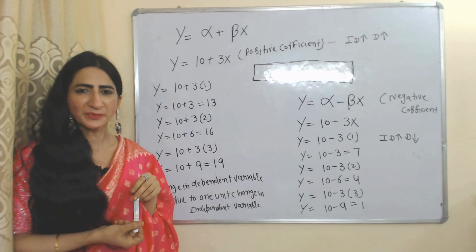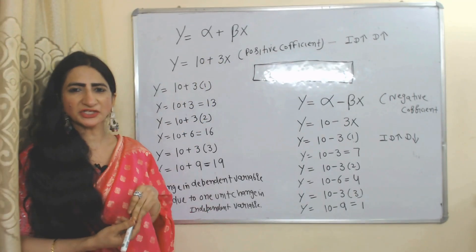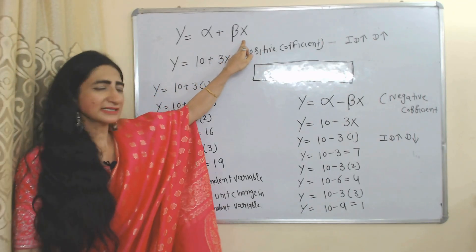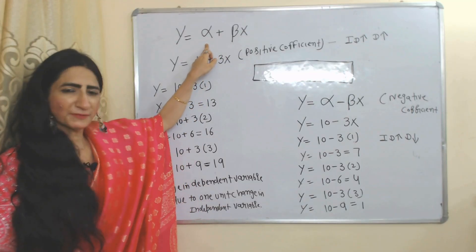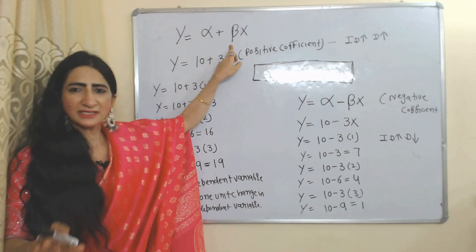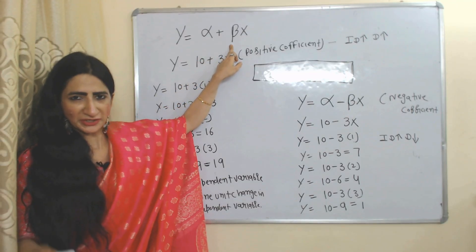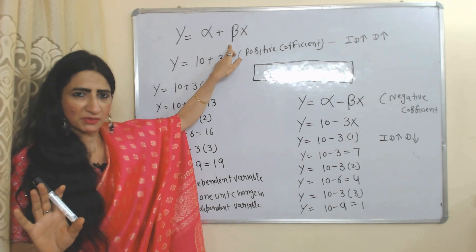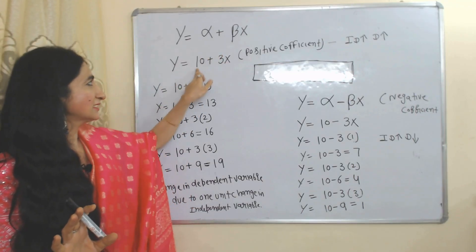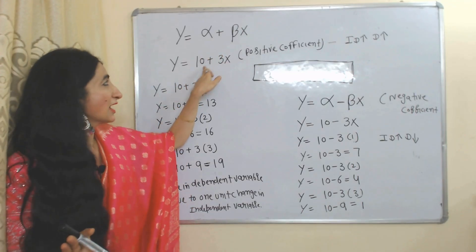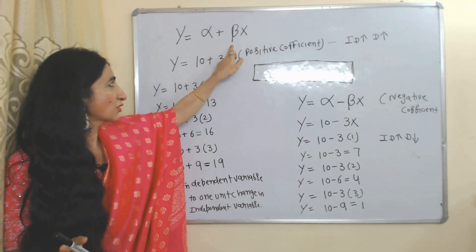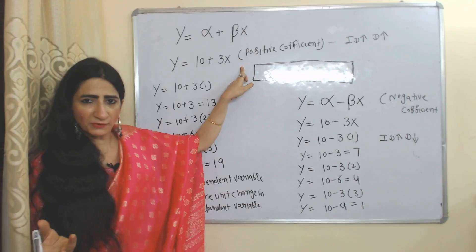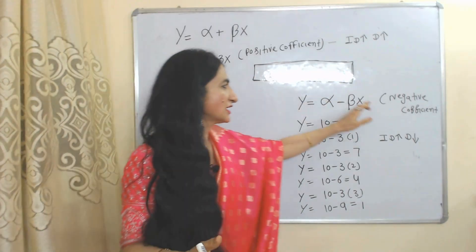Now we will see how to interpret coefficients in a regression model. Here Y is the dependent variable, X is the independent variable, alpha is the intercept, and beta is the coefficient. We put 10 in place of alpha and 3 in place of beta. There are mainly two types of coefficients: positive coefficient and negative coefficient.